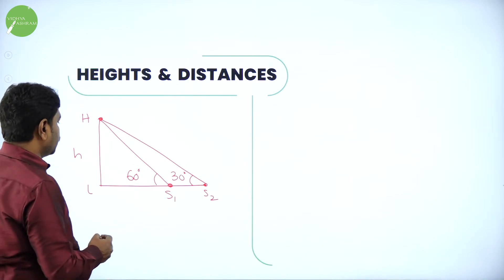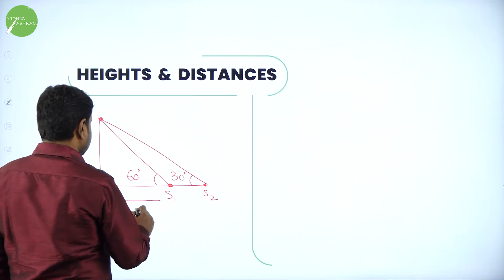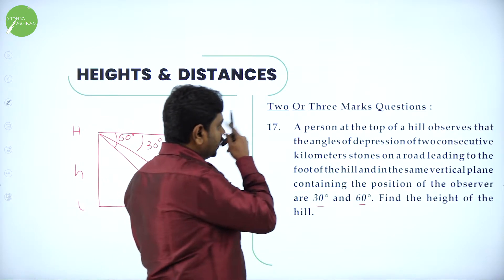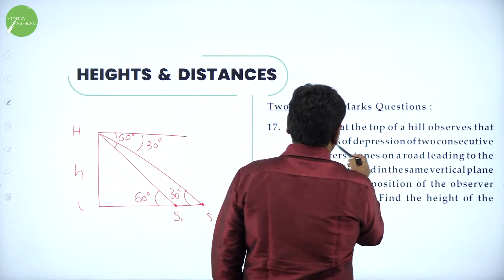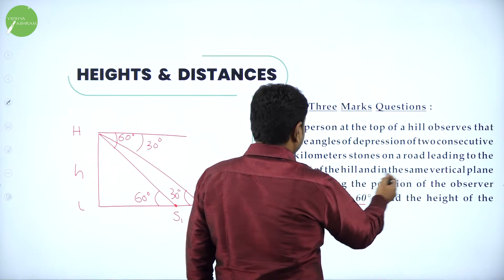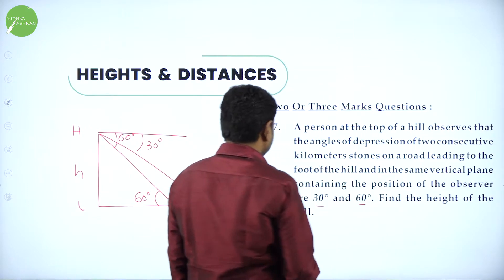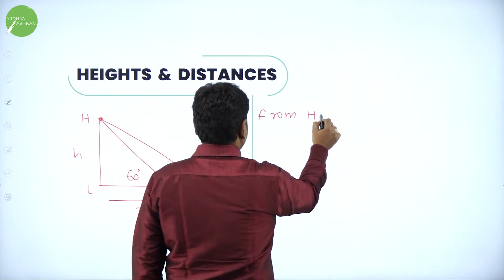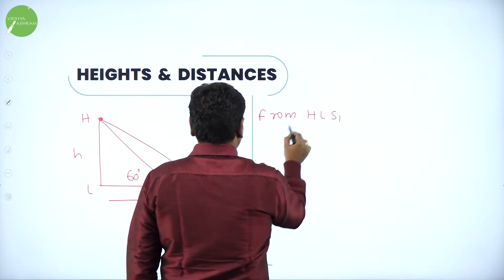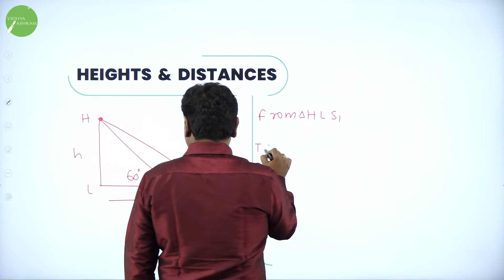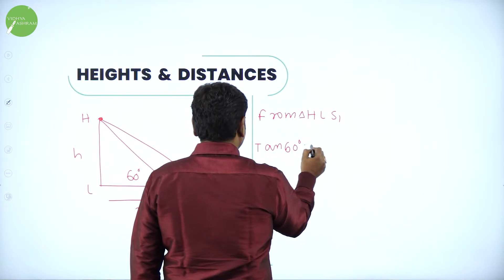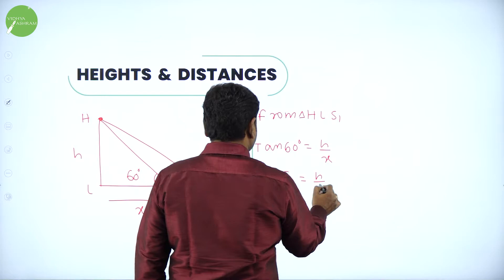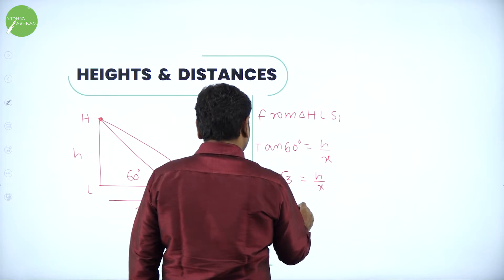Apply tan theta to get the unknowns. Let the distance from the foot of the hill to S1 be x and to S2 be y. From triangle HLS1, tan 60 degrees equals H divided by x. Tan 60 is root 3, so root 3 equals H over x, giving H equals root 3 times x. Call this equation 1.